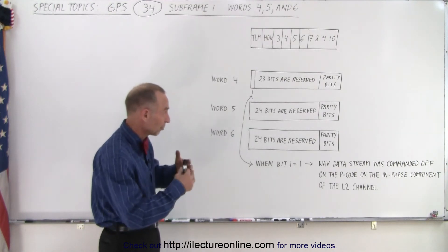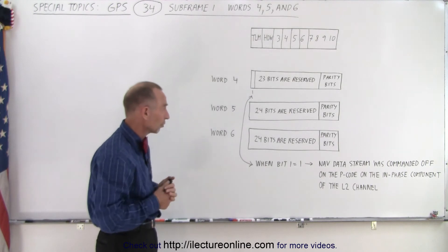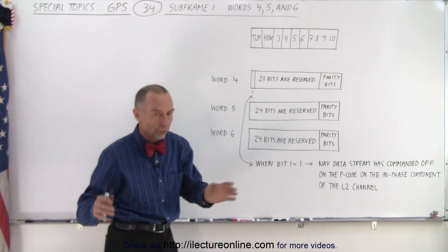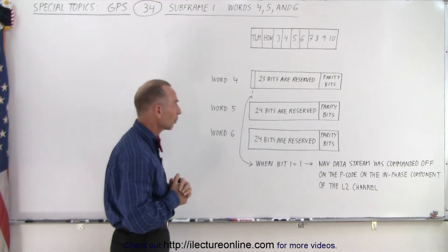So for commercial operation we don't need those data words at all. Of course we have six parity bits at the end of each of the words for every word transmission.